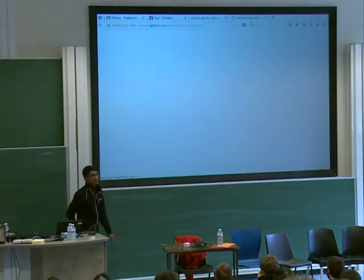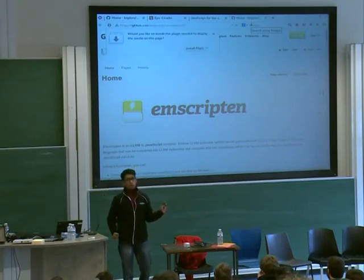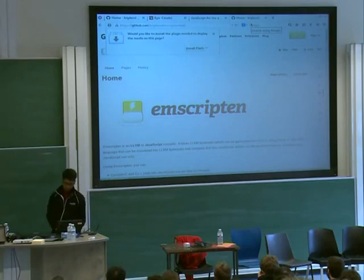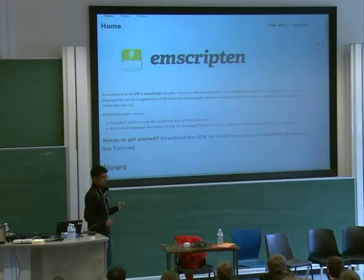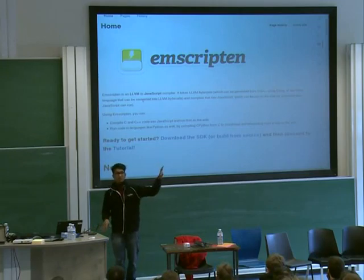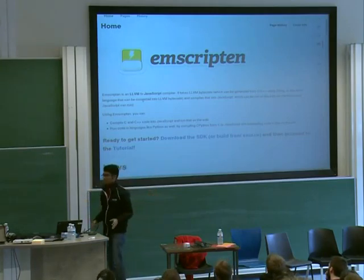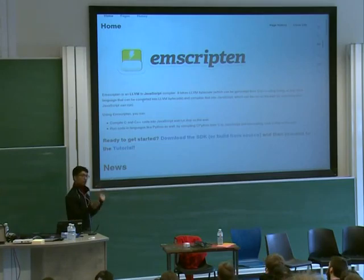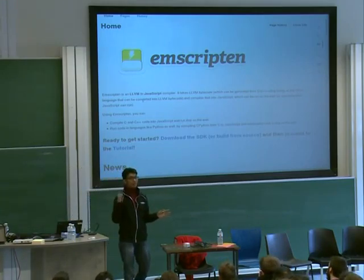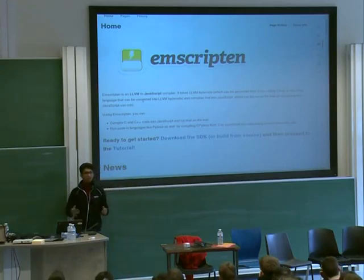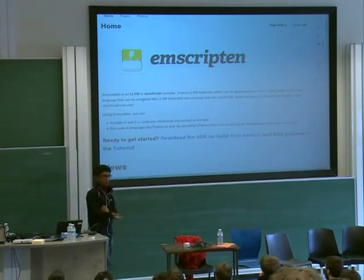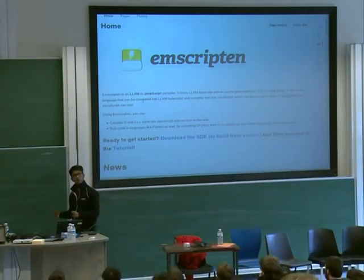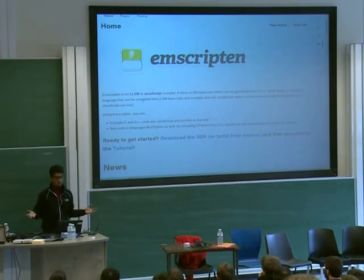What else — Emscripten. Emscripten is the thing that makes asm.js and many of the cool things you see possible, because it actually converts LLVM bytecodes into JavaScript. So you can write code in C, C++, Ruby, Rust — about 20 languages in total. You generate the bytecode, pass it into Emscripten, and Emscripten generates the JavaScript for that, which you can then run on the web in the browser.